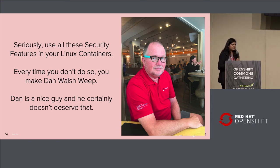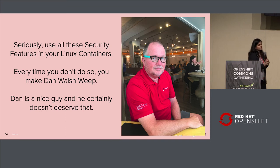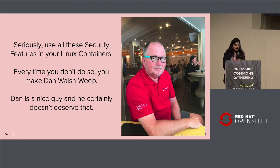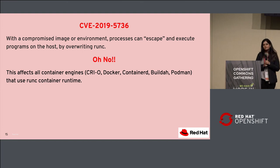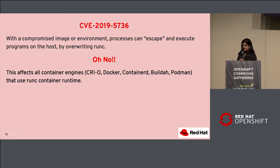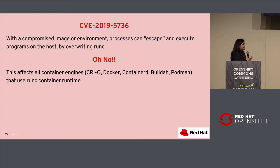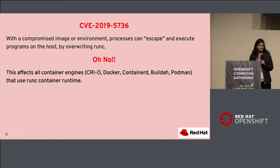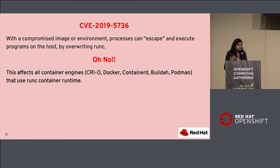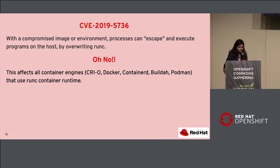CRI-O does have a daemon — a lightweight one — because it needs to talk to the CRI API that Kubernetes provides. When running containers in production, we firmly believe you should run them in read-only mode. This means all processes inside your container should not be able to write to any path in the container — they should only write to volumes you've bind-mounted in, or to three tempfs paths made writable. This way, if your container gets hacked, the attacker won't be able to place a backdoor in your container to maintain access on restart.